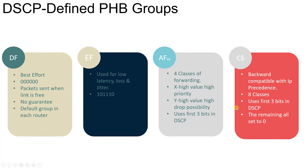Class Selector exists for compatibility purposes. As noted earlier, the first three bits of DSCP align with the IP Precedence model. Class Selector uses these first three bits of DSCP, with the remaining three bits set to zero, giving eight different classes. This is how Class Selector PHB works.